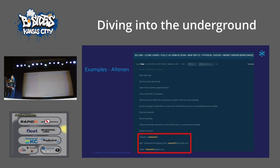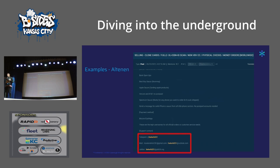Here's another example where threat actors share contact details in their posts — on a forum called Altenen. You can see they shared their Telegram, Jabber, and interestingly also Outlook and Gmail. If I were still in law enforcement, I'd say that makes finding them easy. Don't use your personal Gmail to create your personas.